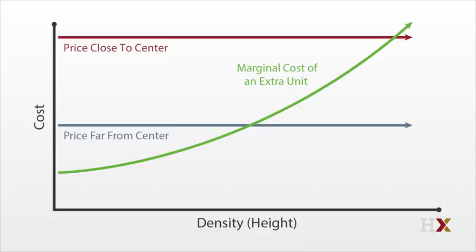And the price far from the city center, which is low. Smart builders will continue building until the point where price equals marginal cost — the intersection of those horizontal lines with the cost curve. That intersection delivers a density for each price.